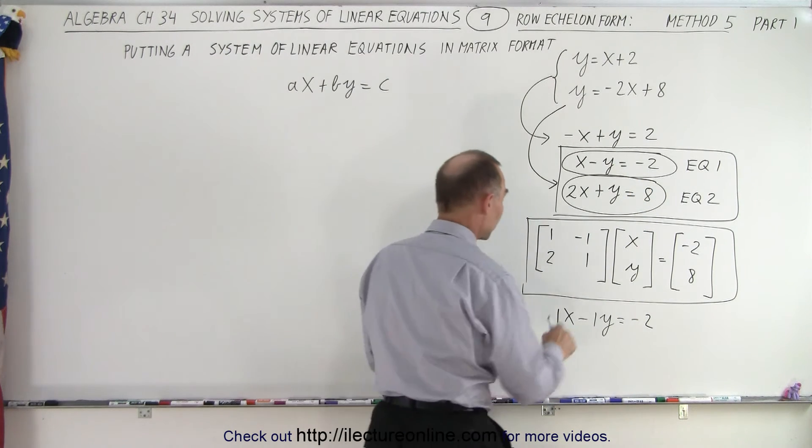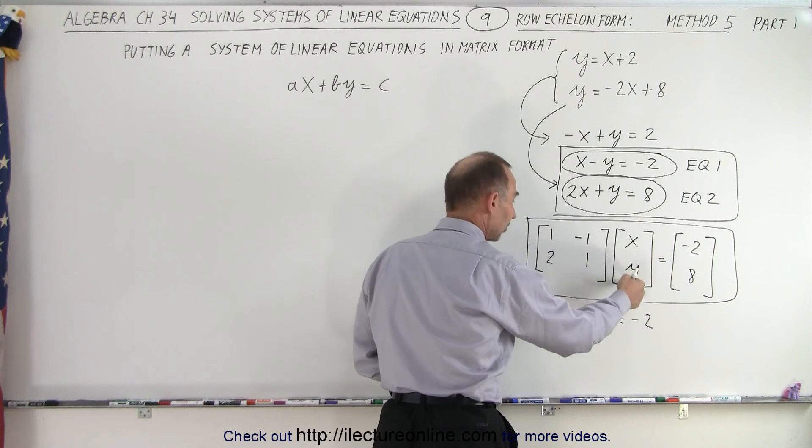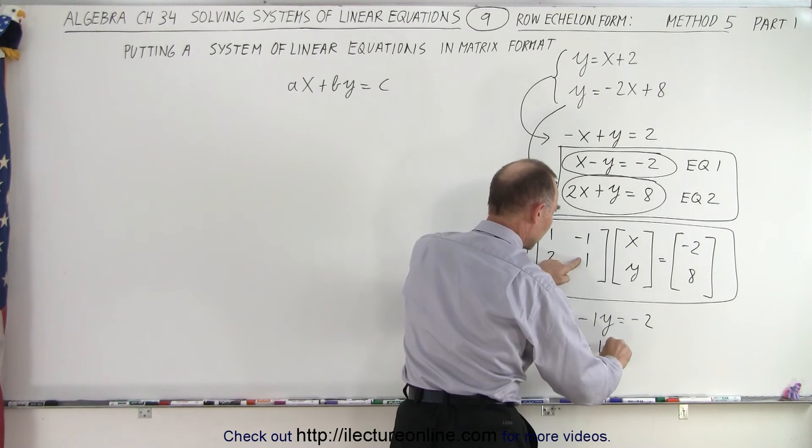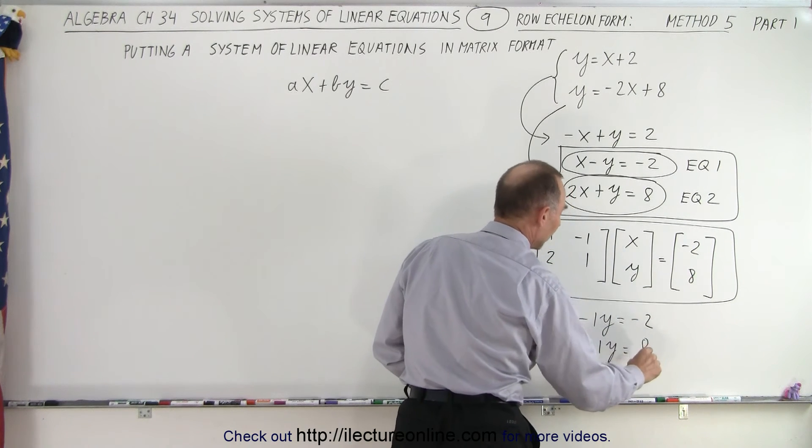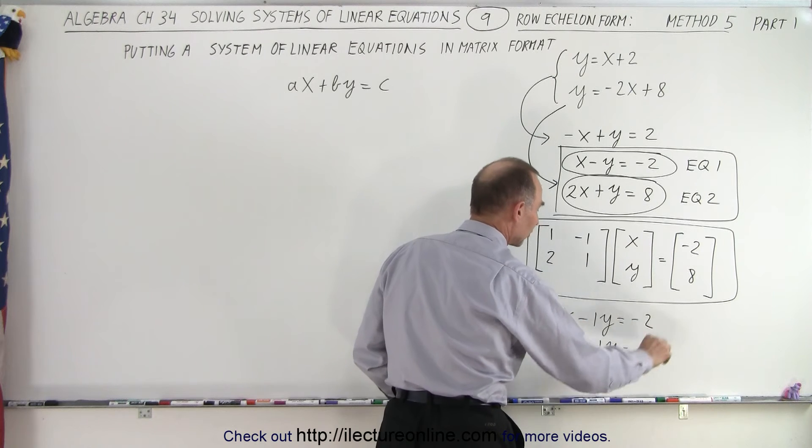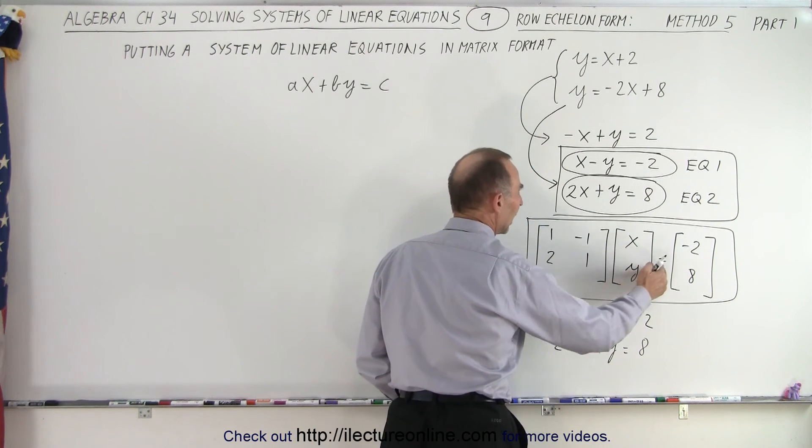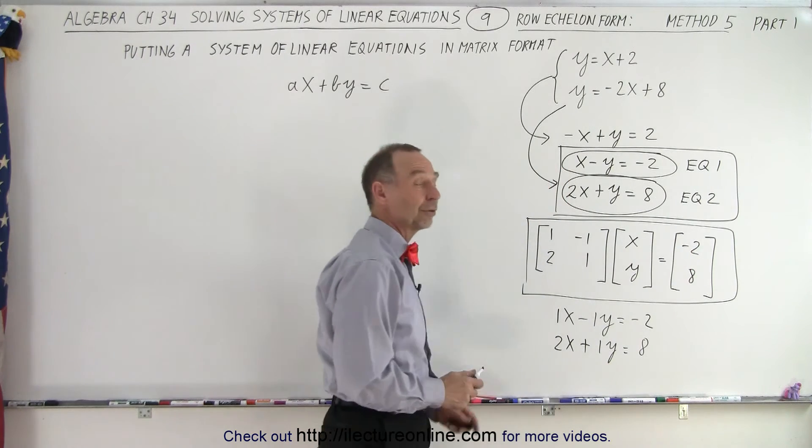For the second equation, I take this row and multiply times this column: 2x + y equals this number. Notice we get the exact same two equations by multiplying these matrices together and setting it equal to that matrix.